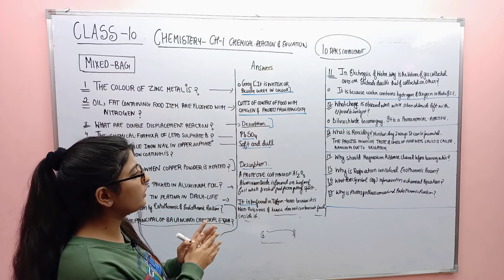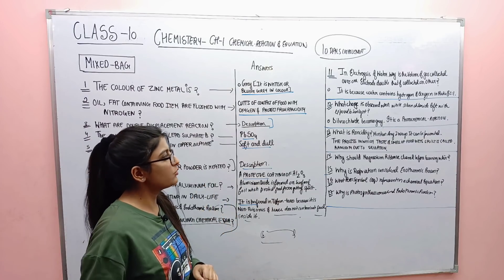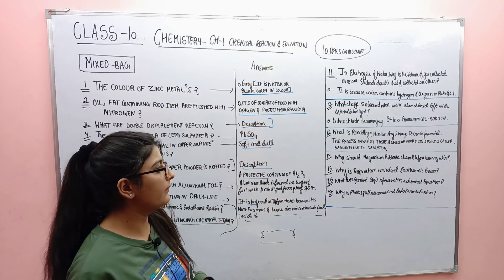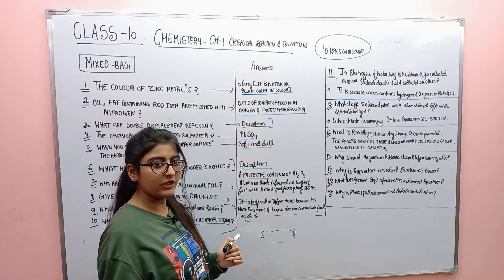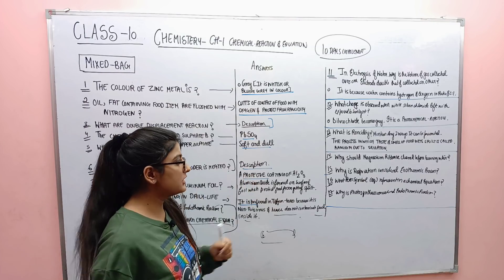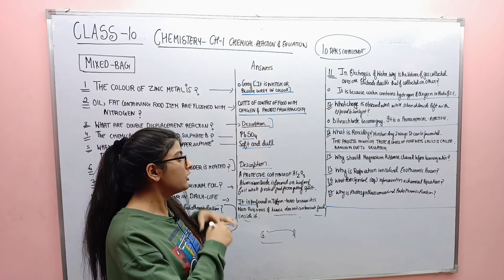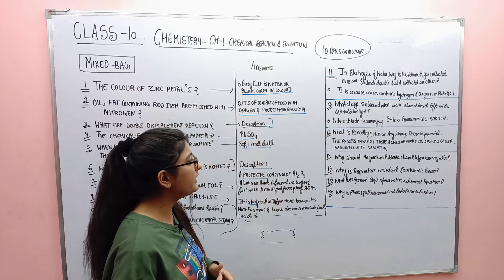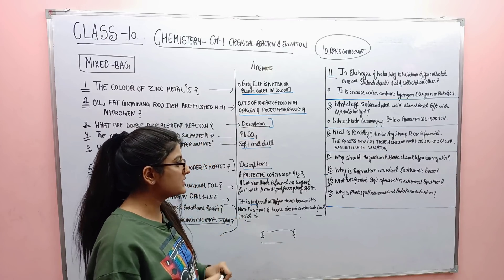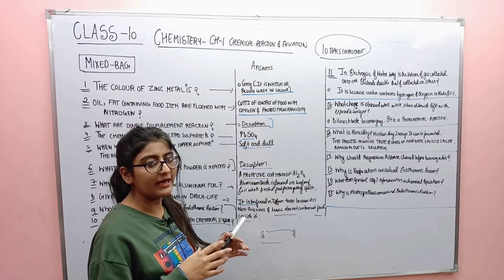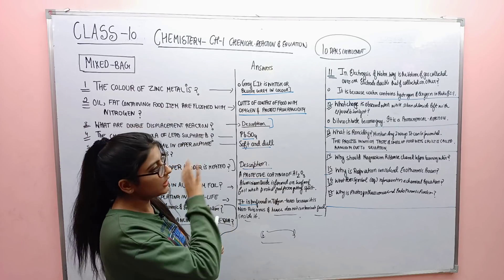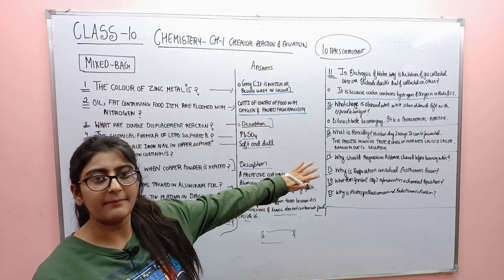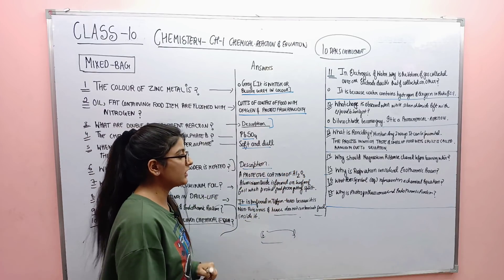Next question: what is rancidity? Mention any two ways it can be prevented. Rancidity is the process in which the taste and smell of food gets spoiled due to oxidation. This definition will be 100% in your exam.